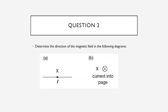Let's do some practice. Question two: determine the direction of the magnetic field at the point marked X. For the first one, we've got a current pointing towards the right. Grip the wire so your fingers curl around and your thumb points right. At a point directly above the wire, your fingers are going to be pointing straight out at you — so the field is out of the page, represented by a dot.